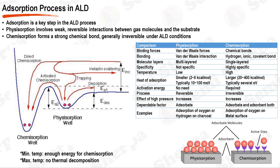Atomic layer deposition is a sophisticated and powerful technique for creating thin films with high precision, and adsorption is a key step in this process. Adsorption in the context of ALD involves the interaction of gaseous precursor molecules with the surface of the substrate. This interaction can be categorized into two types: physisorption and chemisorption. Physisorption involves weak, reversible interactions between the gas molecules and the substrate, primarily driven by van der Waals forces, resulting in a physically adsorbed layer of precursor molecules on the substrate surface.